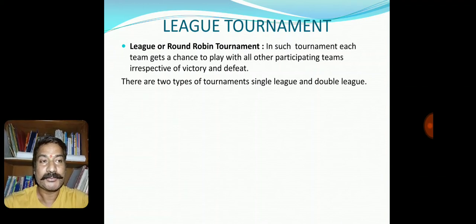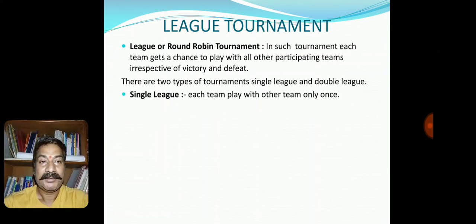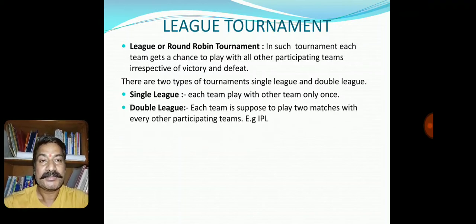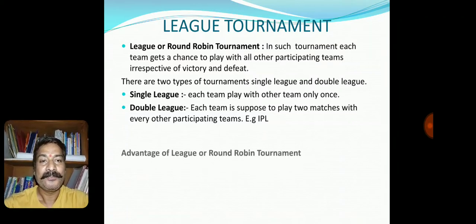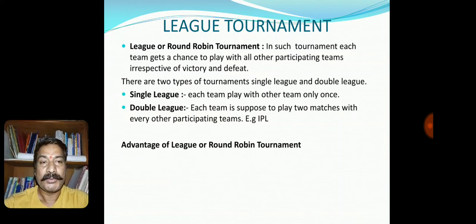In a single league tournament, each team plays with every other team only once. Whereas in a double league tournament, each team is supposed to play two matches with every other participating team. A good example of this is the IPL. Now let us discuss the advantages of the league or round-robin tournament.